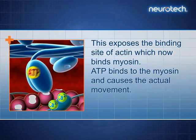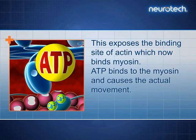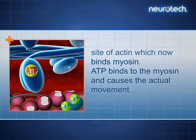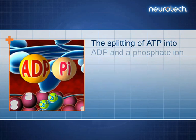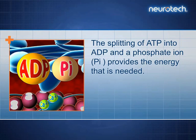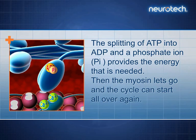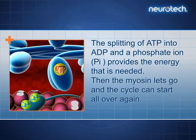ATP binds to the myosin and causes the actual movement. The splitting of ATP into ADP and a phosphate ion (PI) provides the energy that is needed. Then the myosin lets go and the cycle can start all over again.